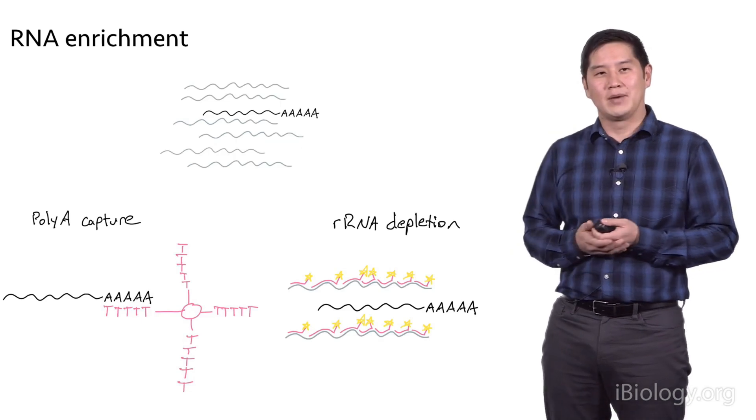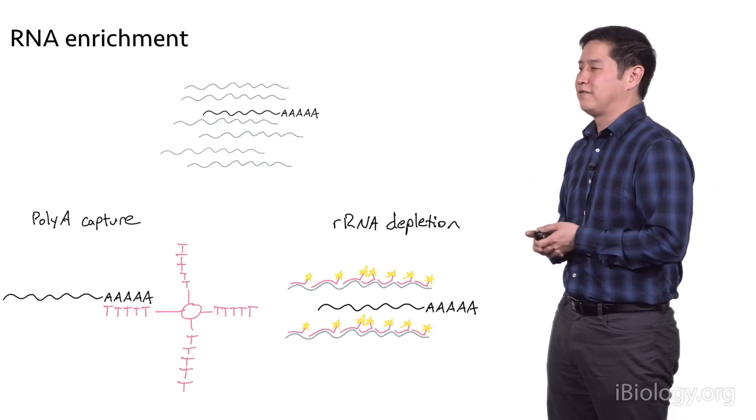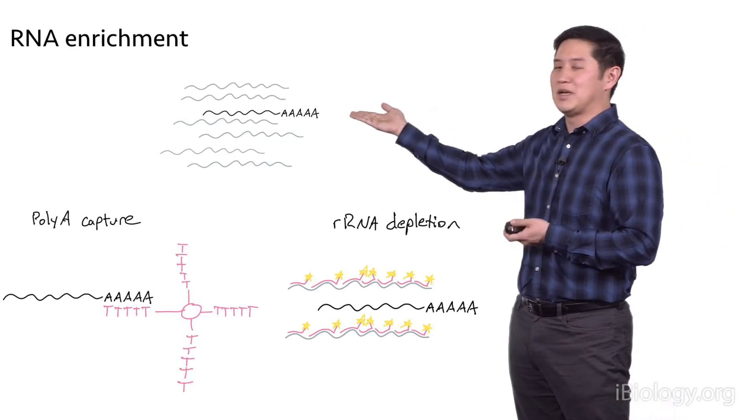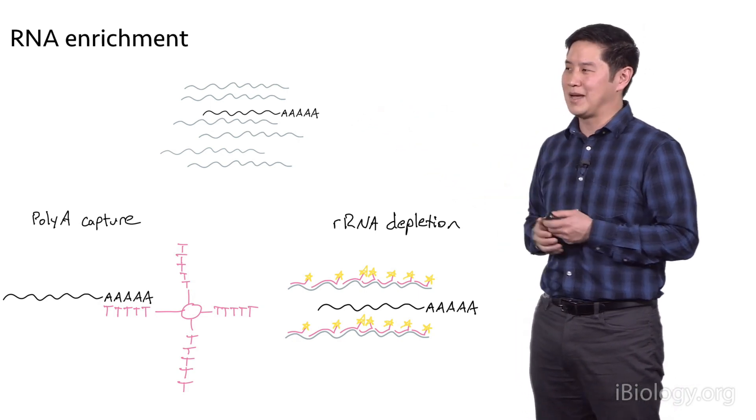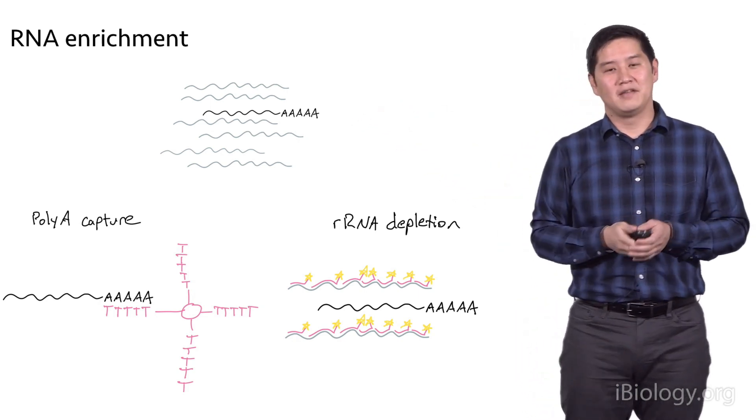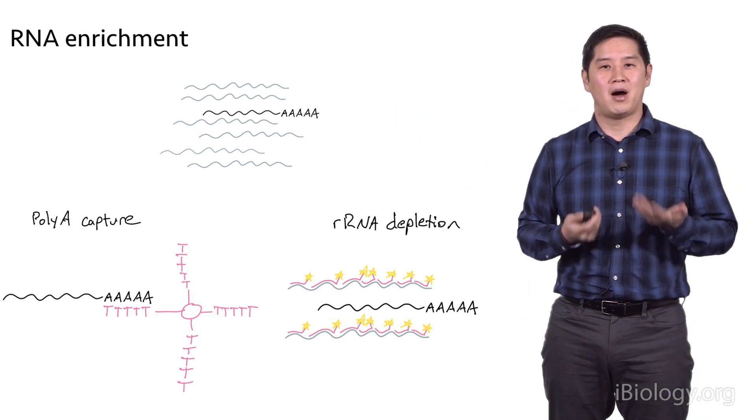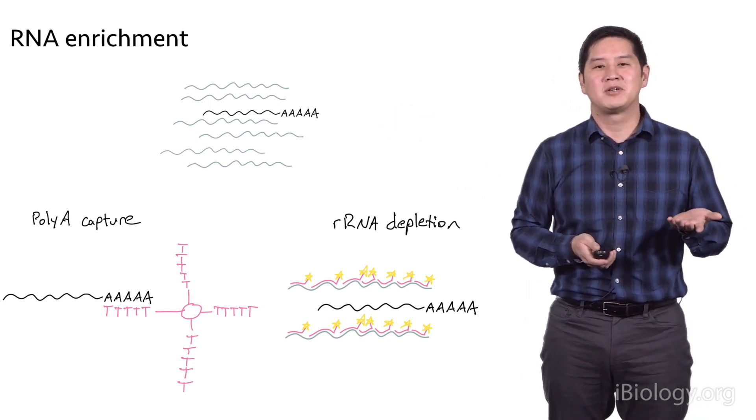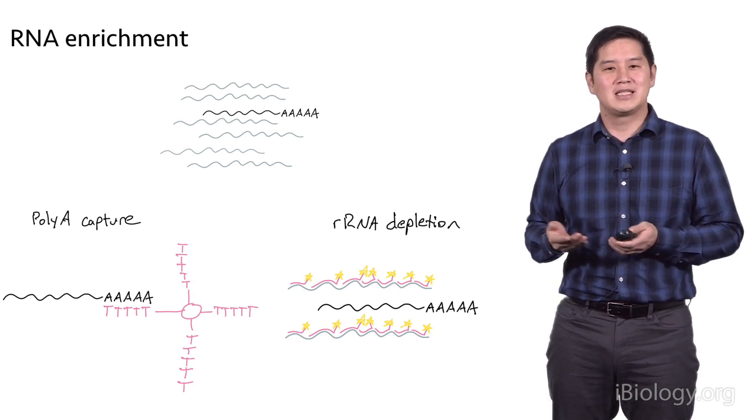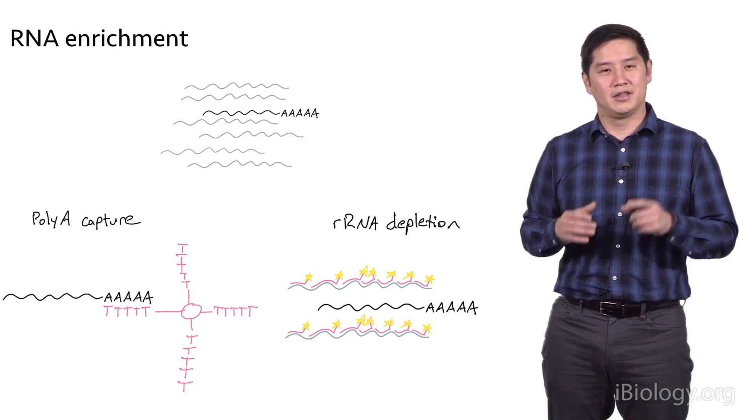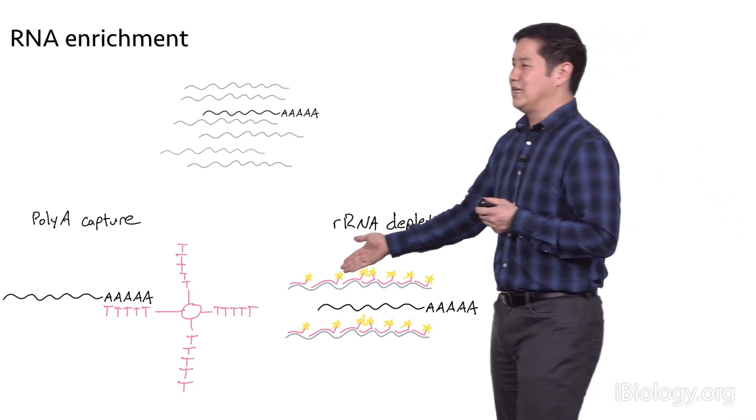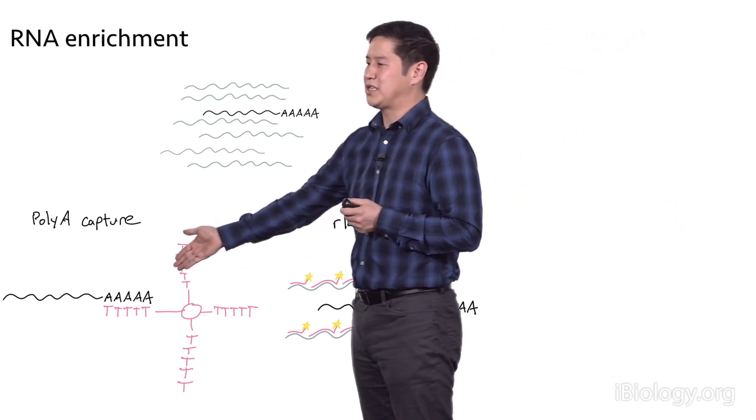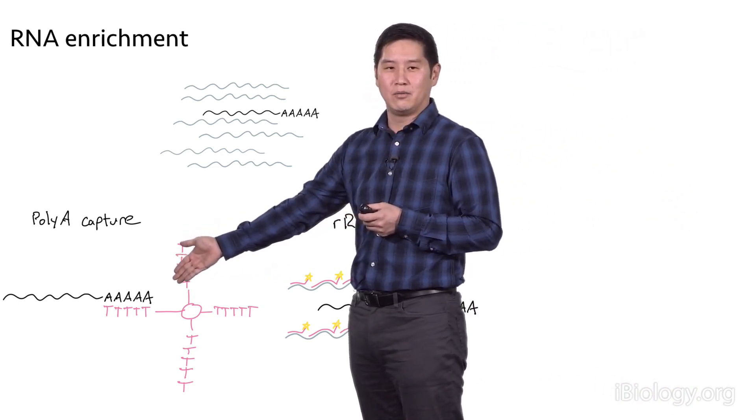First, we have to do some RNA enrichment to select for the polyadenylated messenger RNA transcripts. There are two methods to do this. The first method takes advantage of the fact that messenger RNA has a poly-A tail on the 3' end. We can use a poly-A capture technique that uses beads with oligo-dT on the surface, and these beads are able to capture the messenger RNA through this interaction with the poly-A tails.